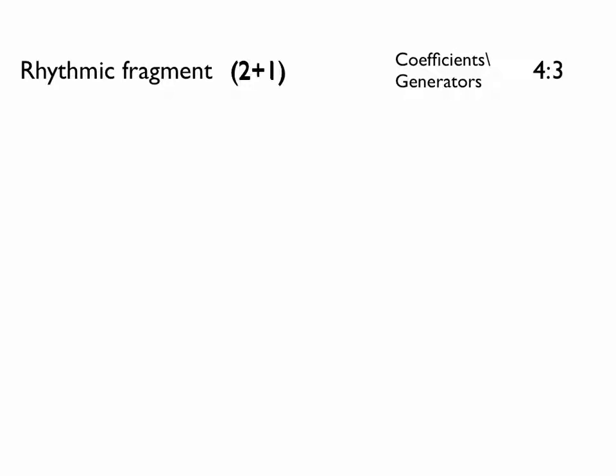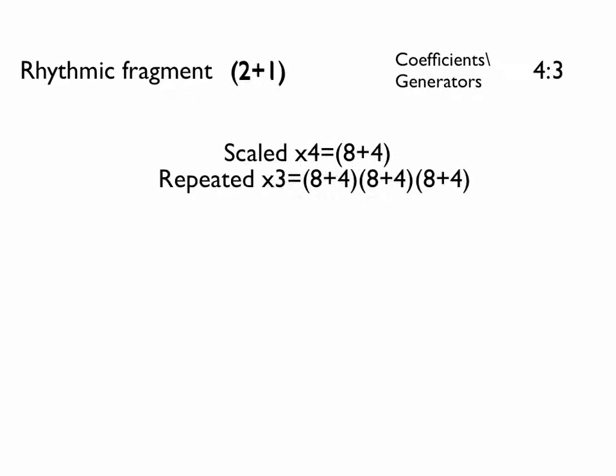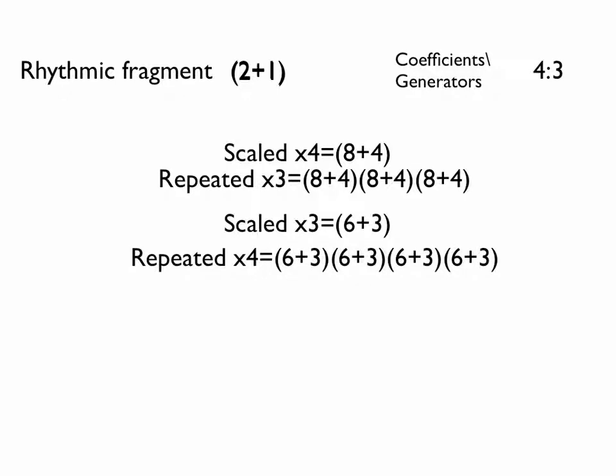Each generator is applied to the fragment twice, first to scale the fragment, and then to determine the quantity of its repetitions. First, the fragment is scaled by the larger generator, then repeated according to the minor generator. Next, the fragment is scaled by the smaller generator, then repeated according to the larger generator.